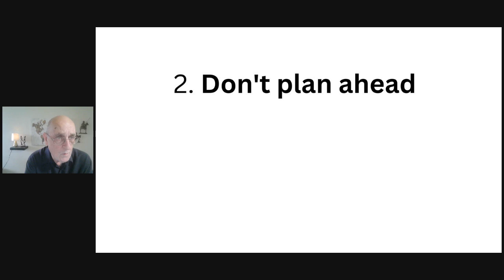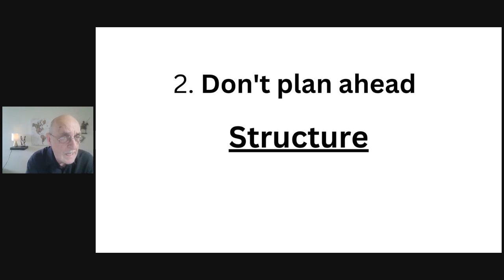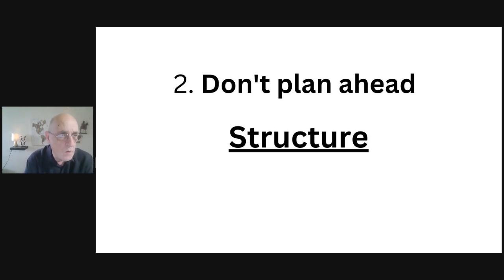The second mistake is that you don't plan ahead before you start writing your essay. One of the main criteria for IELTS writing task two is called coherence and cohesion — this is really how you structure your essay. Before you begin writing, you need to plan everything that's going to go into the body of your essay so that you know exactly how you're going to structure it. It has to be logical and well planned.